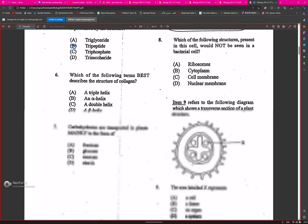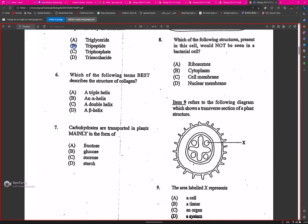Question six: which of the following terms best describes the structure of collagen? Triple helix. Question seven: carbohydrates are transported in plants in the form of?